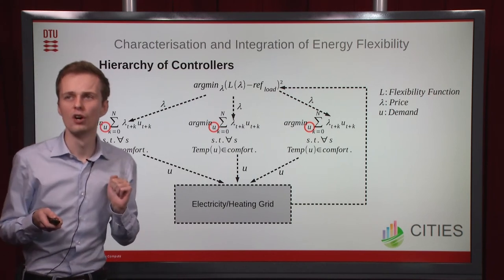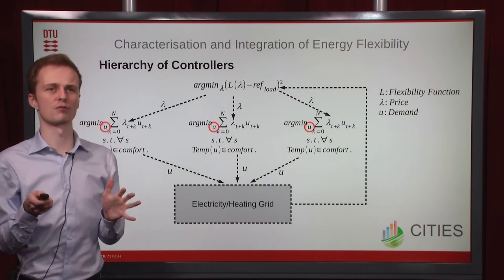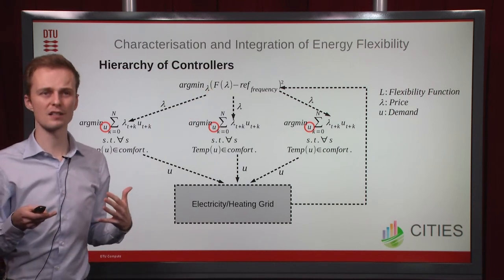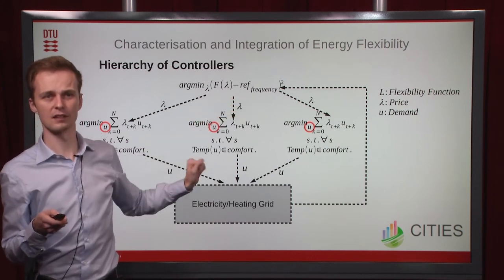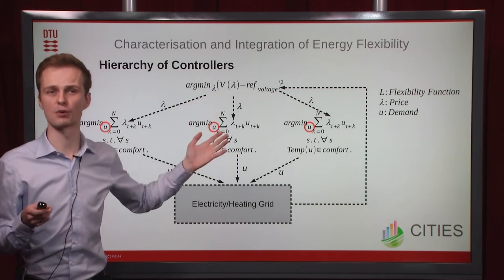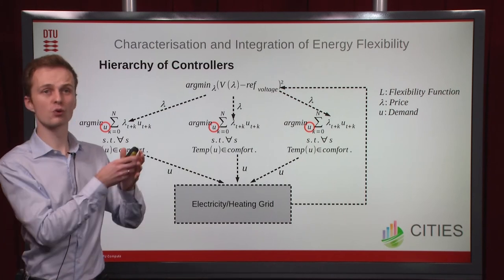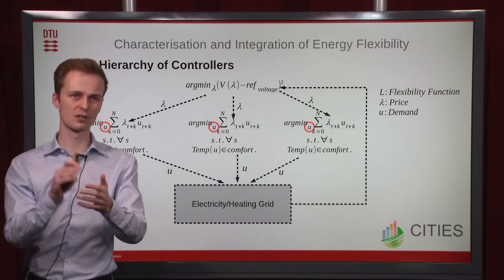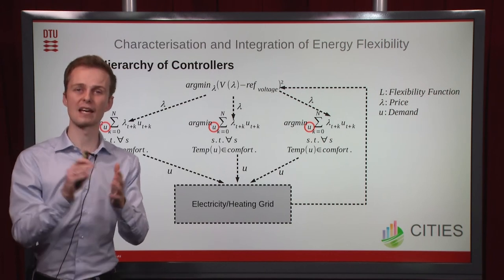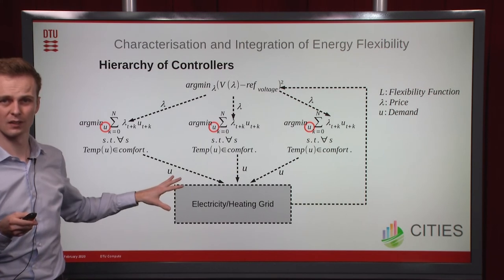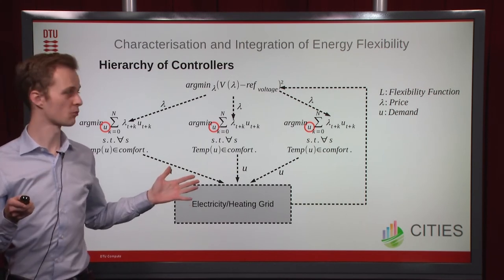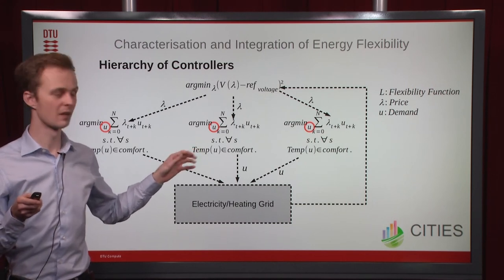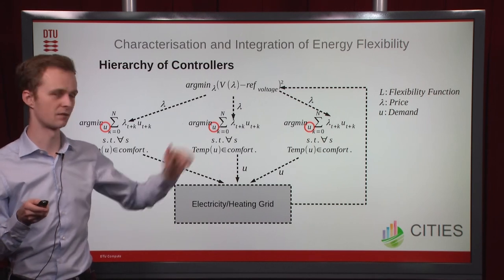This is not limited to load following. You could equally consider frequency: if you have a function f giving frequency as a function of price, you can make the frequency follow a reference. You could go further and address voltage problems the same way. Or you could combine all objectives — minimizing CO2 emissions, making load follow a reference, and controlling frequency and voltage — while the rest of the framework, all the consumers, don't have to change a thing. This is why we believe the future of the smart power system is price-based hierarchical control based on the flexibility function.